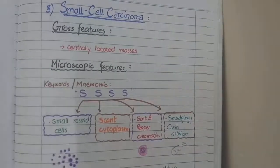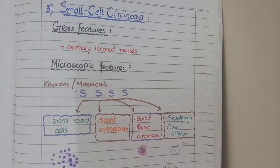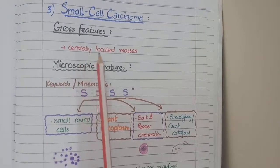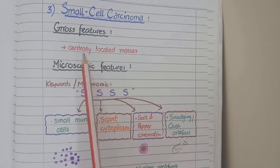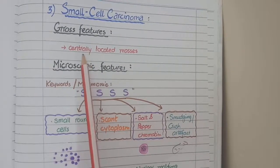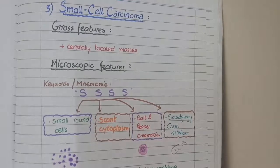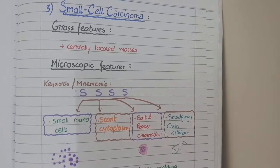Now we will discuss the morphology of small cell carcinoma. On gross specimen, small cell carcinoma presents as tumor masses that are central in position — near the hilum of the lungs. So both squamous cell carcinoma and small cell carcinoma present as centrally located masses.